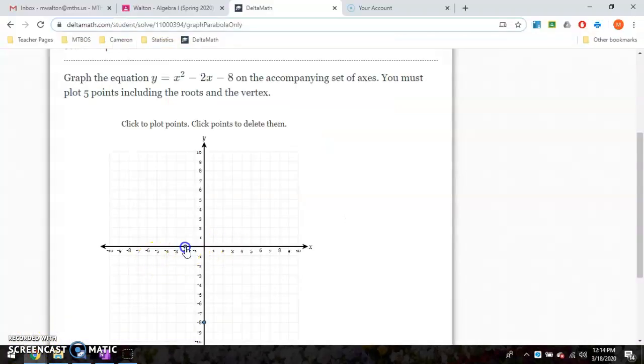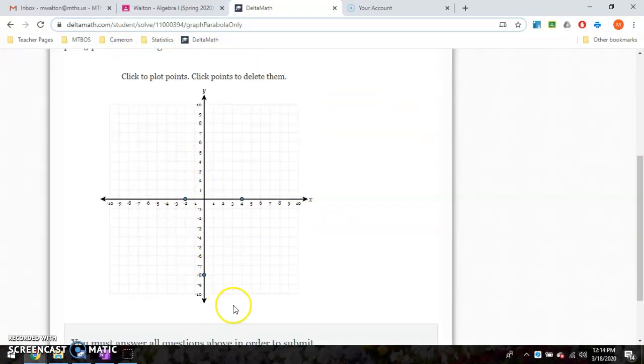Alright. So negative two and positive four. Nice. Okay. So we're slowly coming up here. We have our two x-intercepts. We have our y-intercept. We know it's smiley.